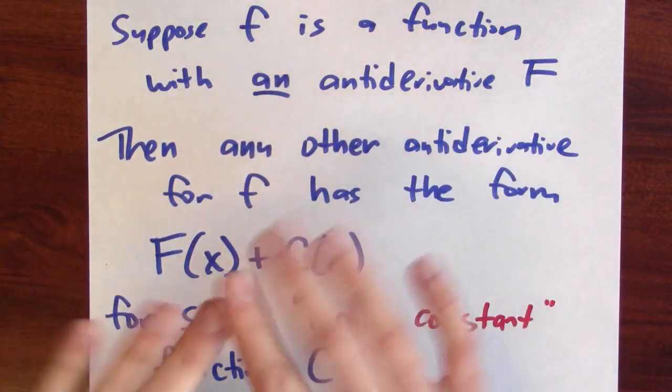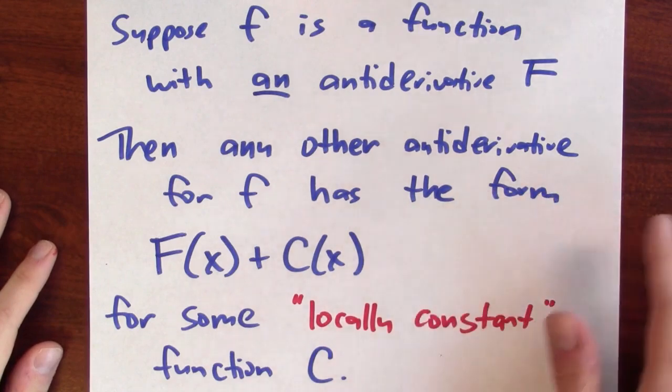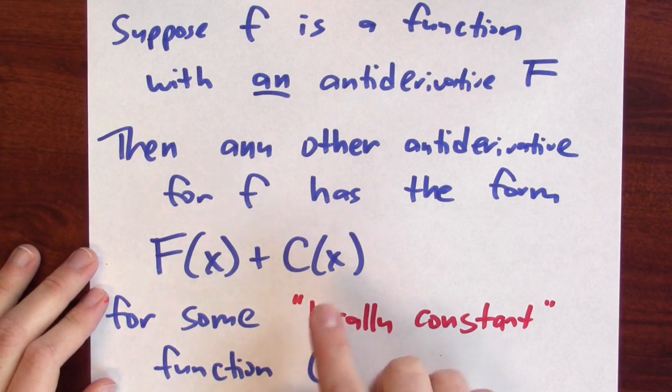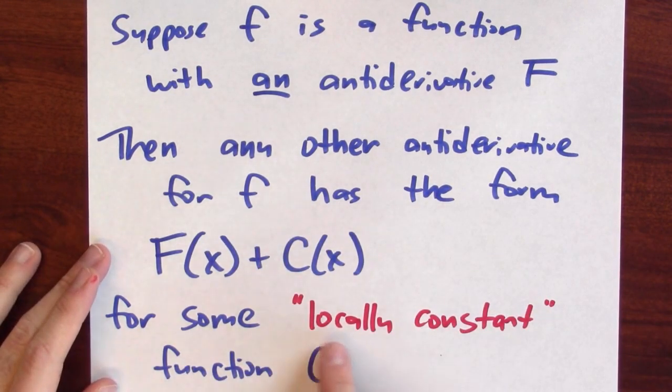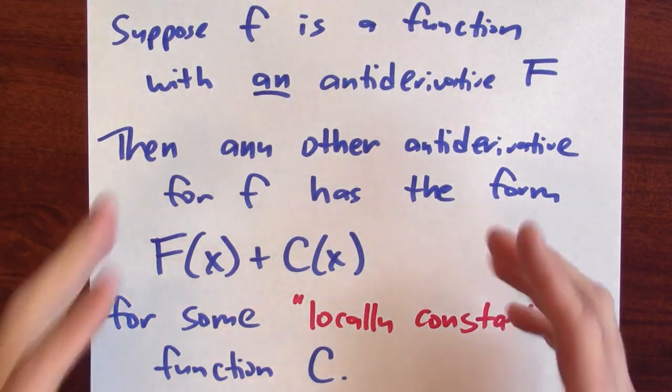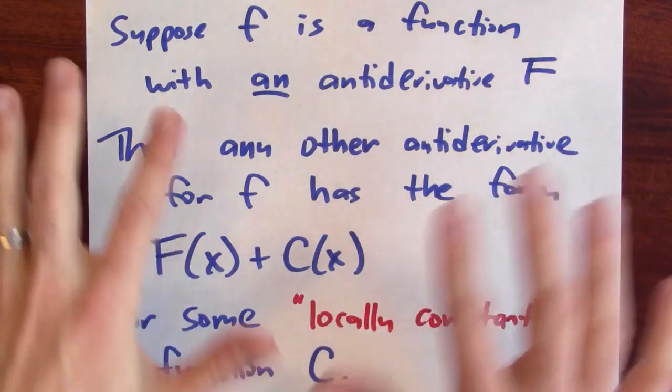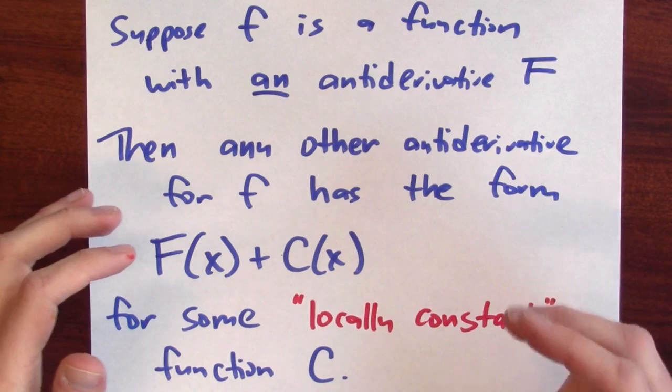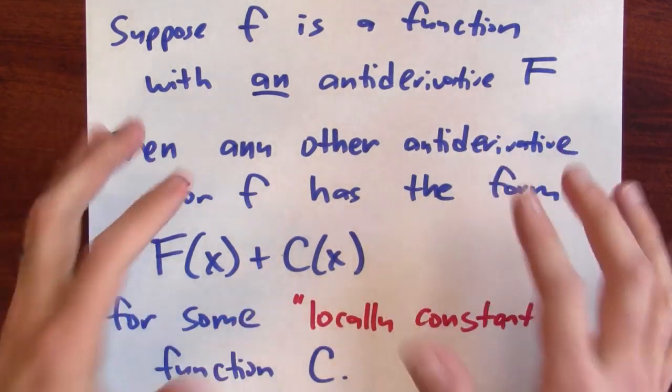One way to summarize this is as follows: suppose that f is a function with an antiderivative F. Then any other antiderivative for f has the form F(x) + c(x), where c is not a single constant anymore. C is some locally constant function. The point is that this so-called constant could be different on different pieces of the domain. Just like in this example with 1/x, the constant can change on the right and left-hand side of 0.